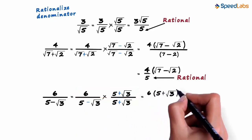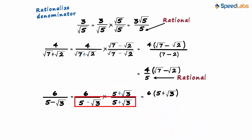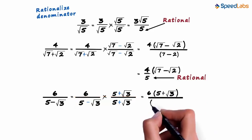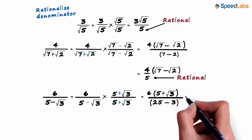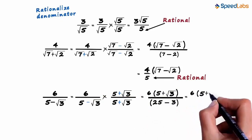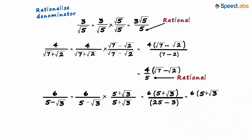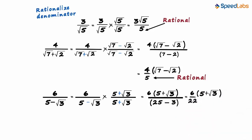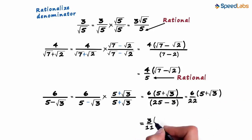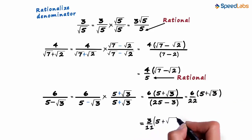The denominator will equal 5 squared minus √3 squared, which equals 25 minus 3. We can write this as 6 multiplied by (5 plus √3) divided by 22. Simplifying further, we can write it as 3/11 multiplied by (5 plus √3).